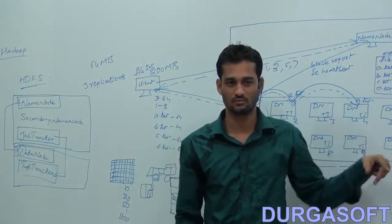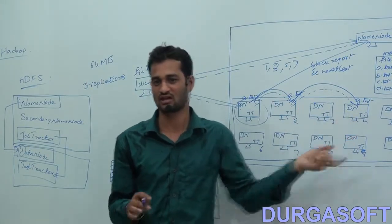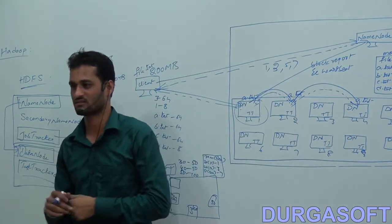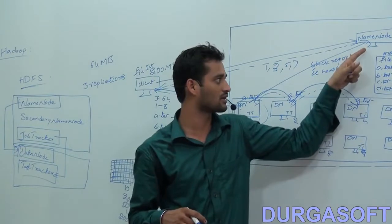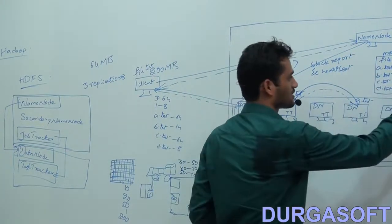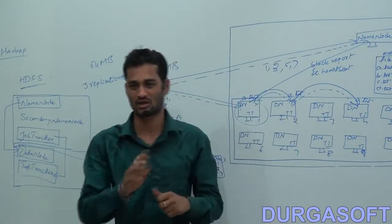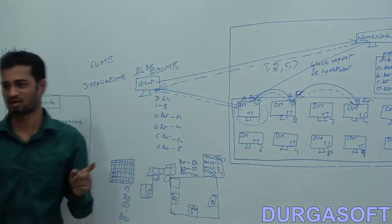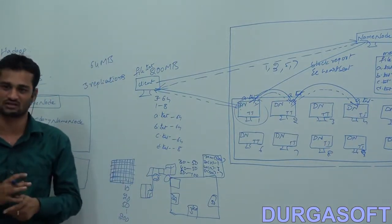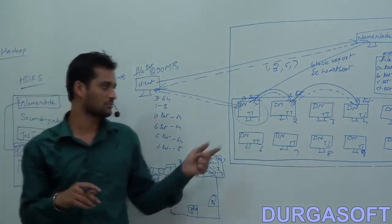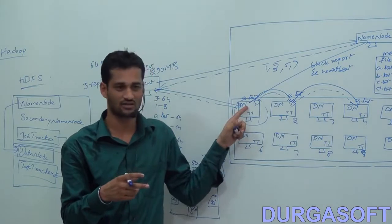If you maintain a smaller block size like 4 KB, you would need a very large amount of metadata and a much larger Name Node hard disk. With 64 MB block sizes, 500 GB of data produces only 7,500 blocks — much less metadata. This is the key reason block size is set to 64 MB. Since the Name Node's hard disk requirement is small, you can afford high-reliable hardware for it to avoid data loss.